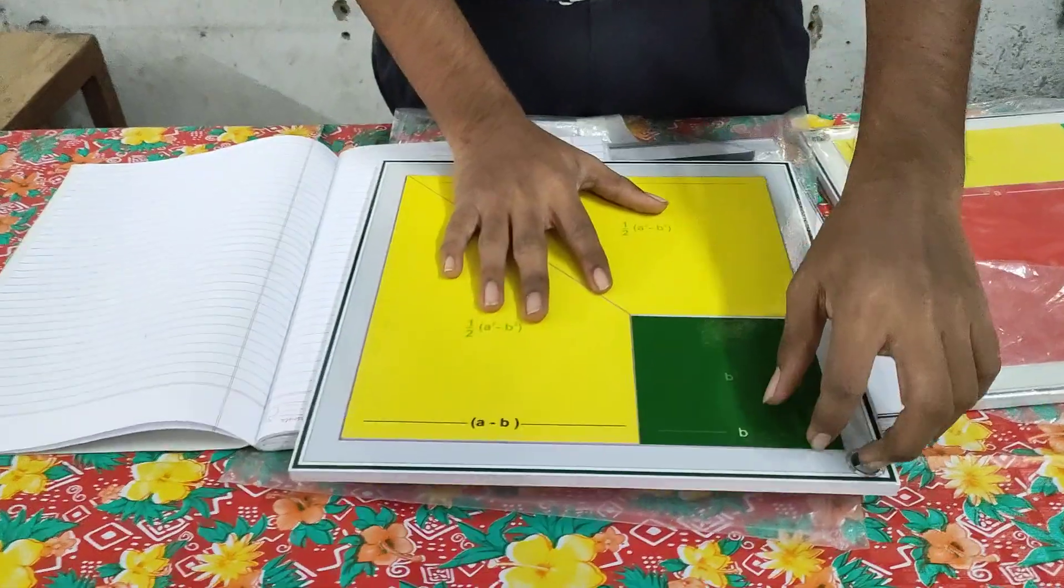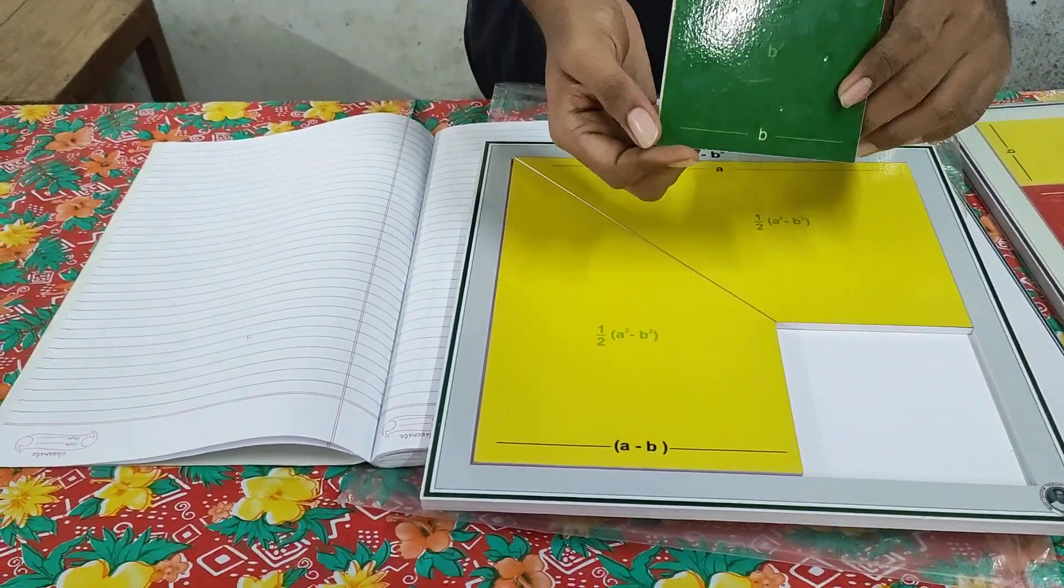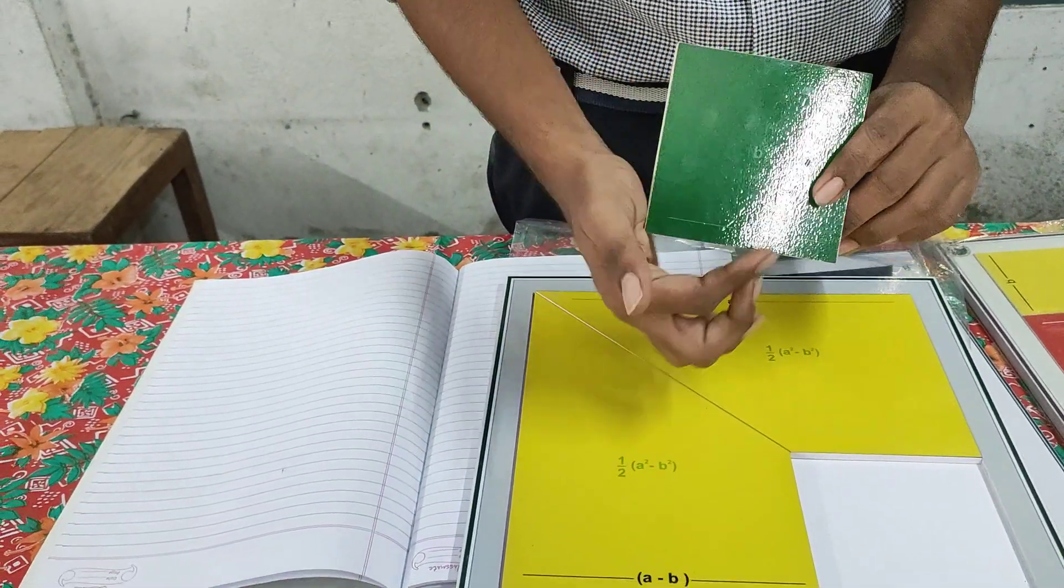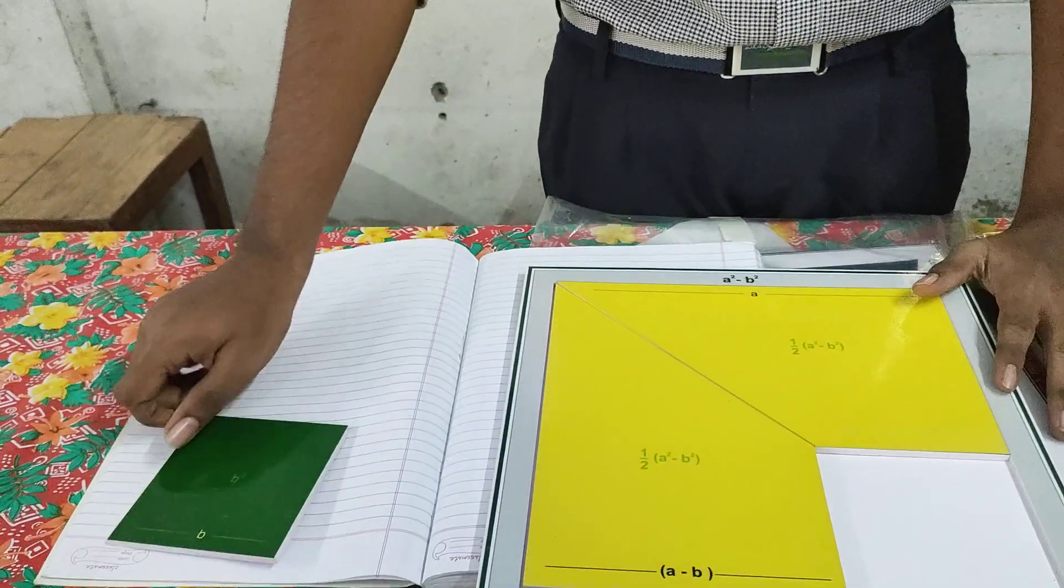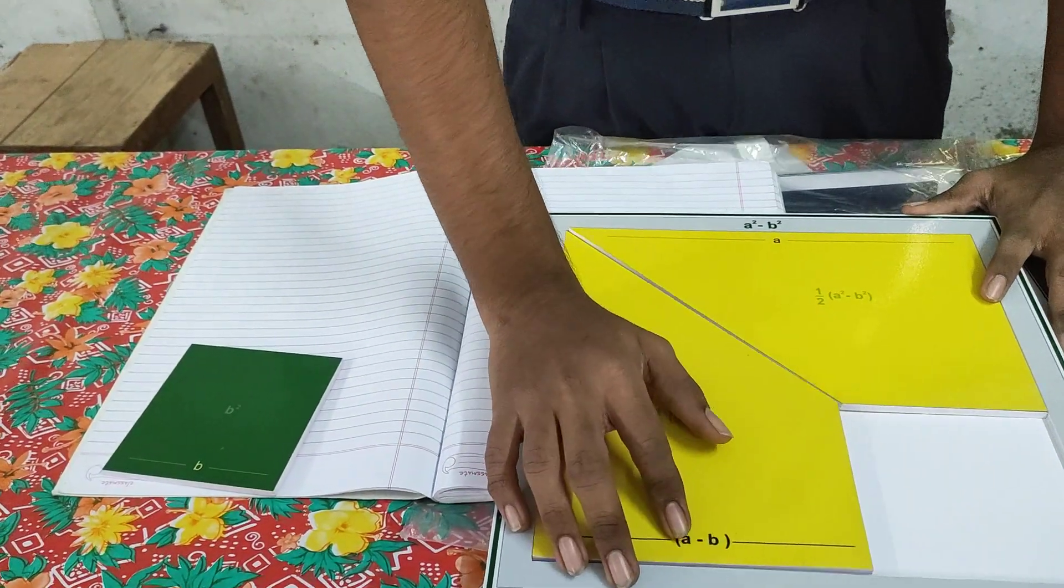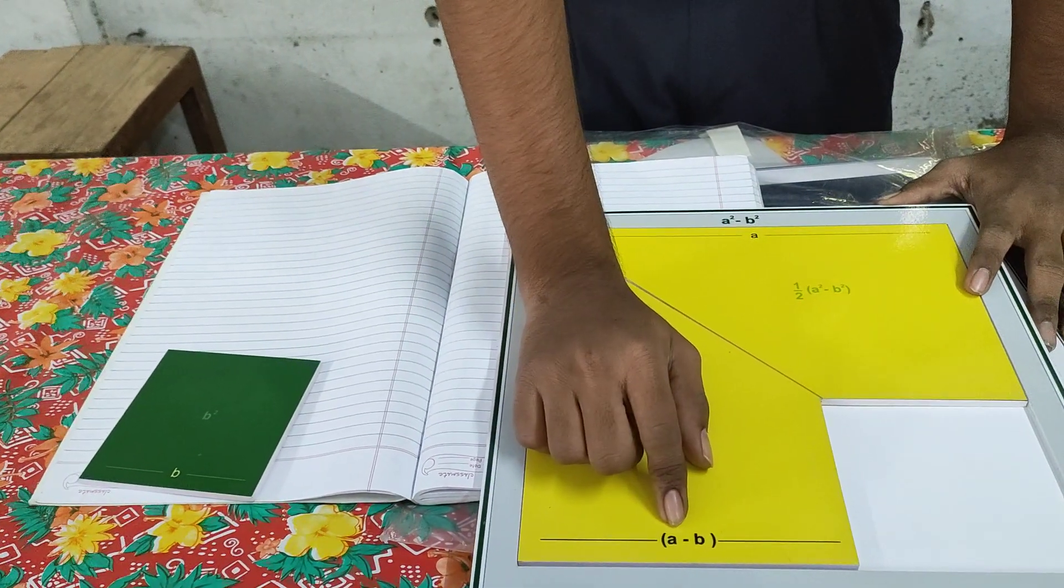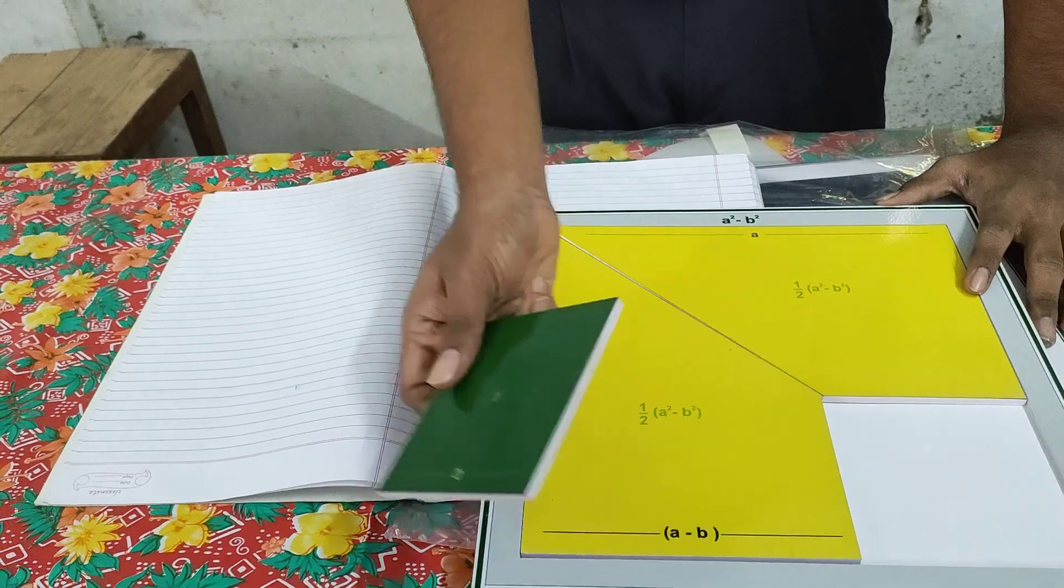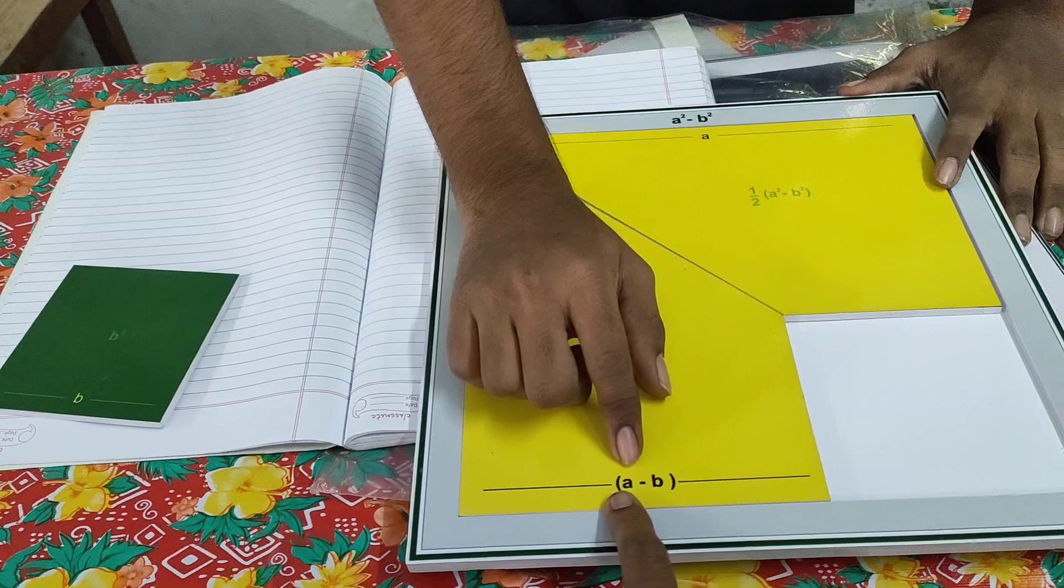In this a² square, we take off this small square with side b. The area of this square will be b², side b times side b equals b². Let us keep it apart. The remaining piece has area a² - b². The length of the side will be a - b because we took off b from the big square which had side a.